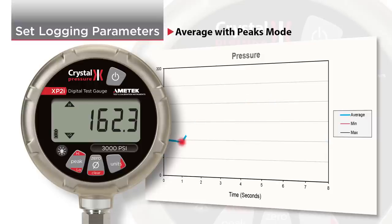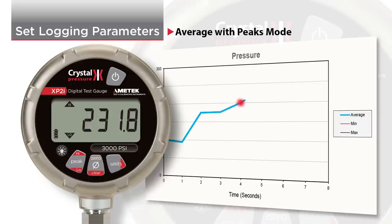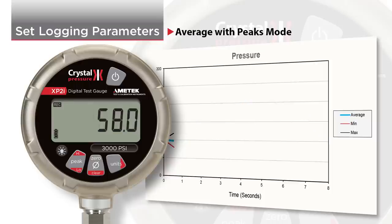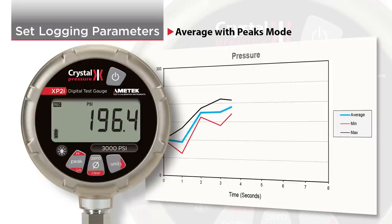Average with peaks will record the average between the logging intervals, just like average mode. But it also records the highest and the lowest readings that occur between logging intervals.